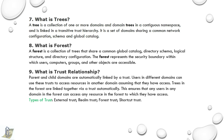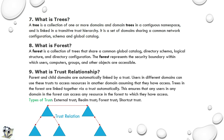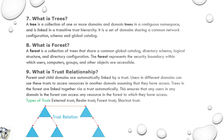Ninth question: What is a trust relationship? Parent and child domains are automatically linked by a trust. Users in different domains can use these trusts to access resources in another domain, assuming they have access. Trees in the forest are linked together via a trust automatically, ensuring any user in any domain can access any resource in the forest to which they have access. Types of trust are: external trust, realm trust, forest trust, and shortcut trust.